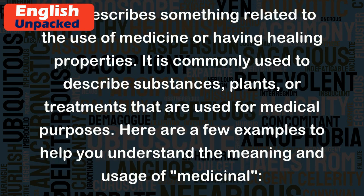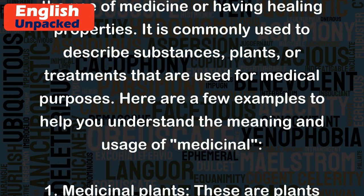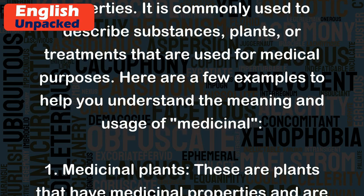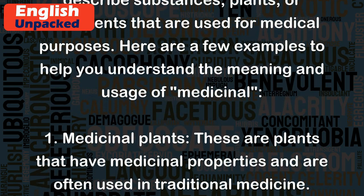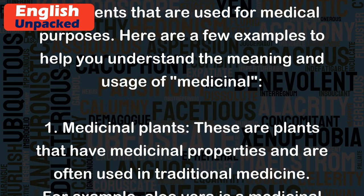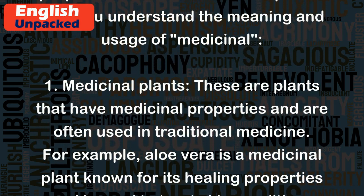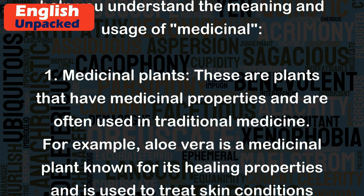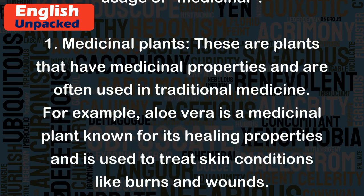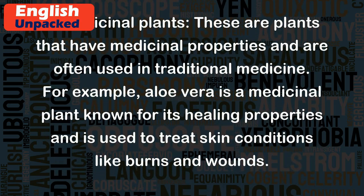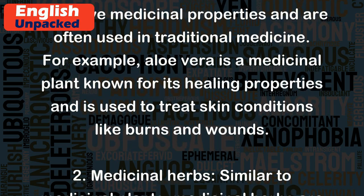Here are a few examples to help you understand the meaning and usage of medicinal. One: Medicinal plants. These are plants that have medicinal properties and are often used in traditional medicine. For example, aloe vera is a medicinal plant known for its healing properties and is used to treat skin conditions like burns and wounds.